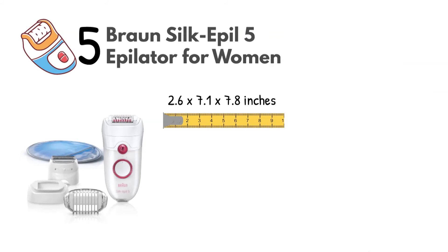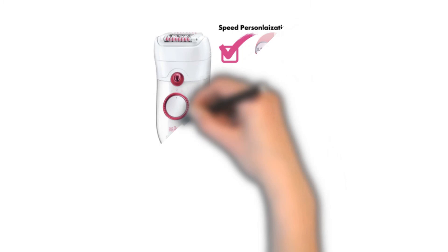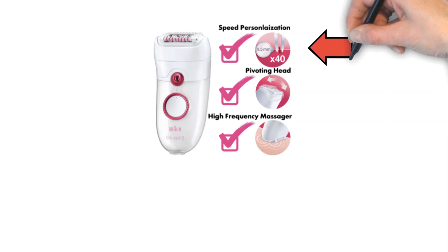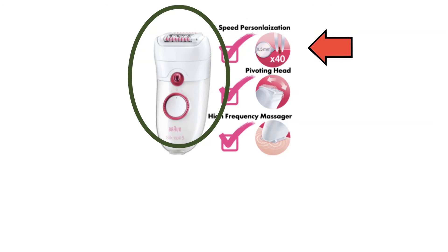At number 5, we have the Braun Silk-épil 5 Epilator for Women. Dimensions of this product are 2.6 x 7.1 x 7.8 inches and it weighs 1.3 pounds. Braun's specially designed Close-Grip 40 Tweezer Technology lets this epilator catch hair as small as a grain of sand. It's designed for uninterrupted use in dry conditions but fully washable under running water for maintenance.